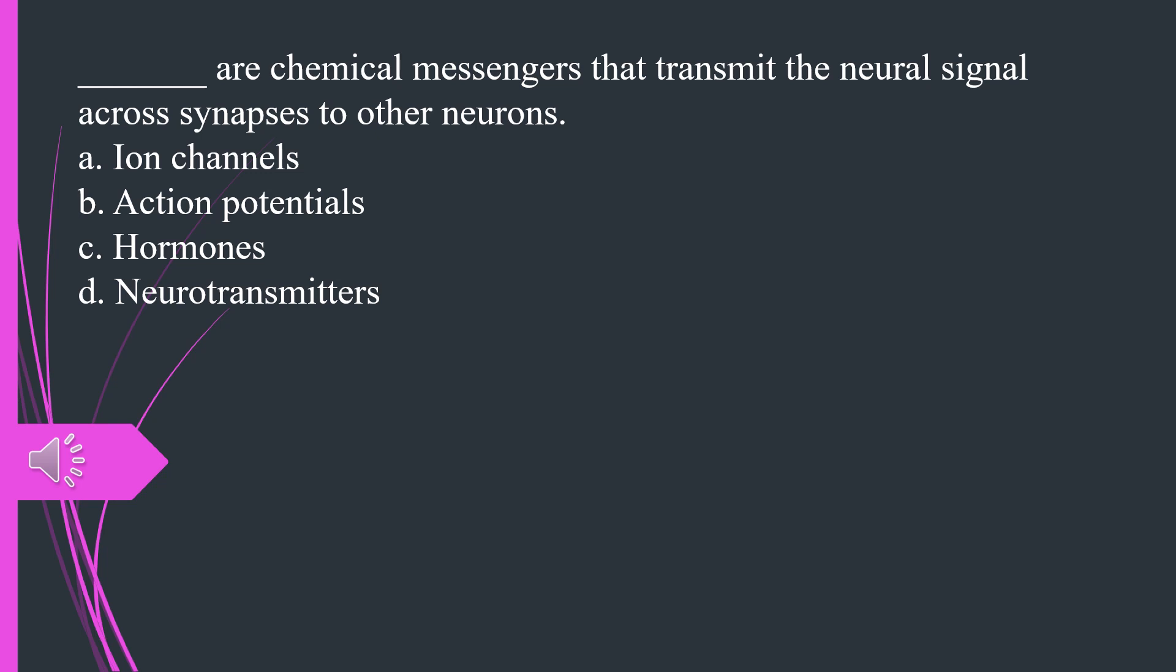What are chemical messengers that transmit the neural signal across synapses to other neurons. A. Ion channels B. Action potentials C. Hormones D. Neurotransmitters. The answer is D, neurotransmitters.